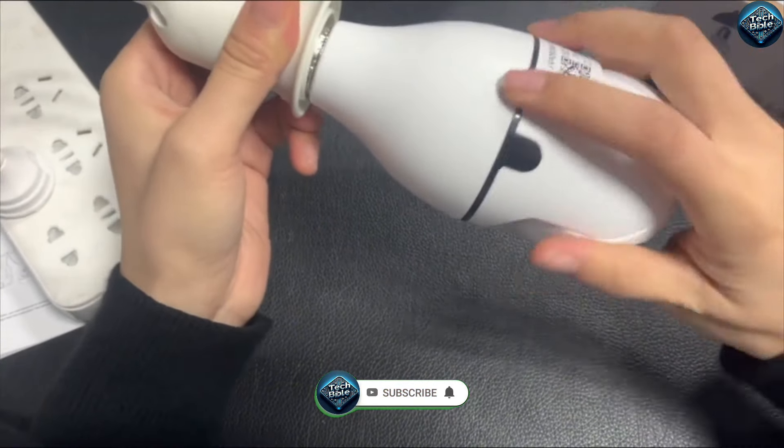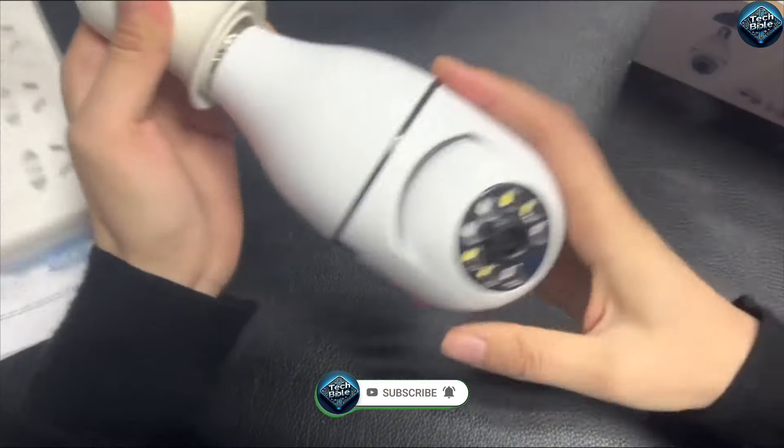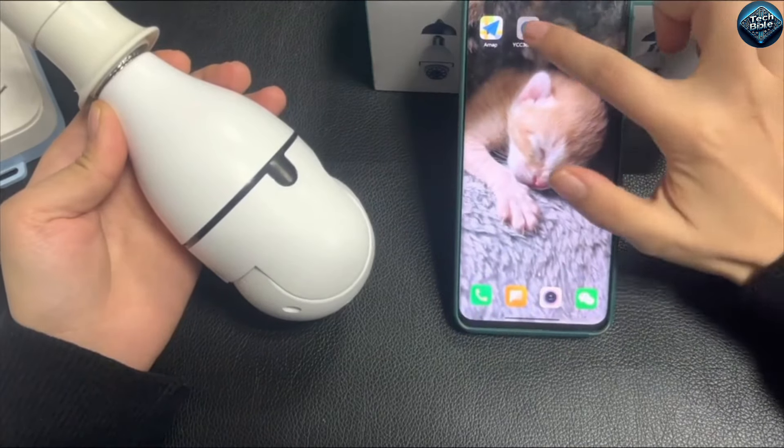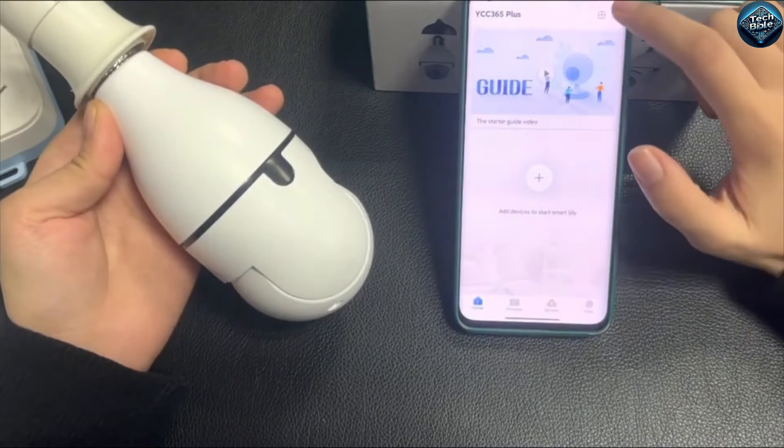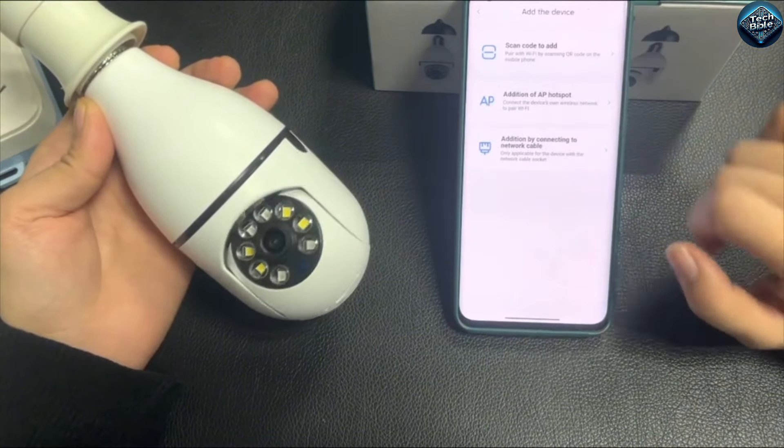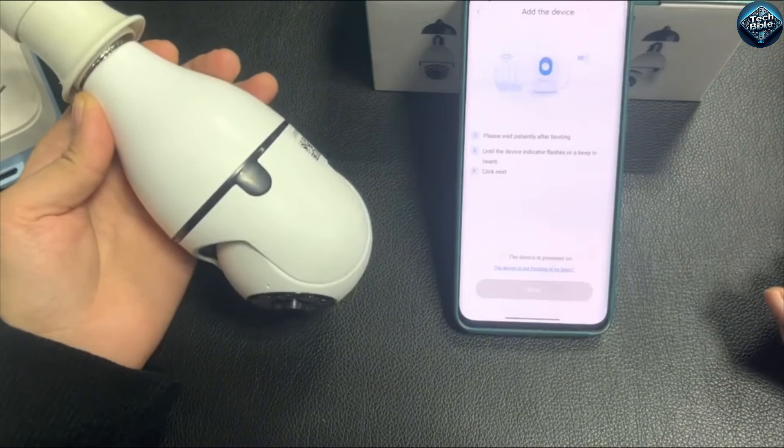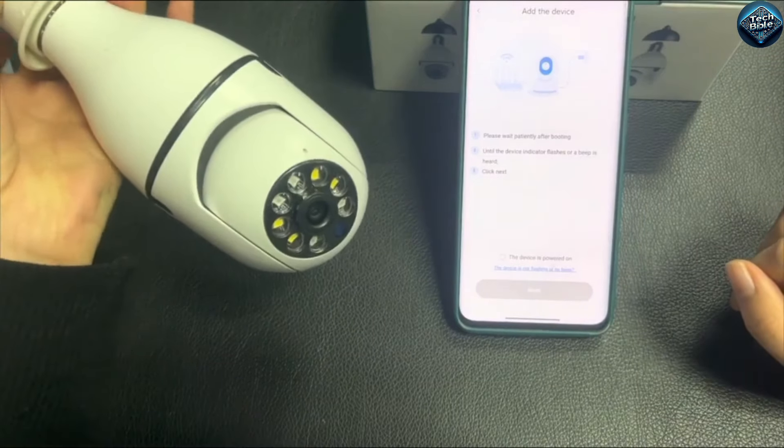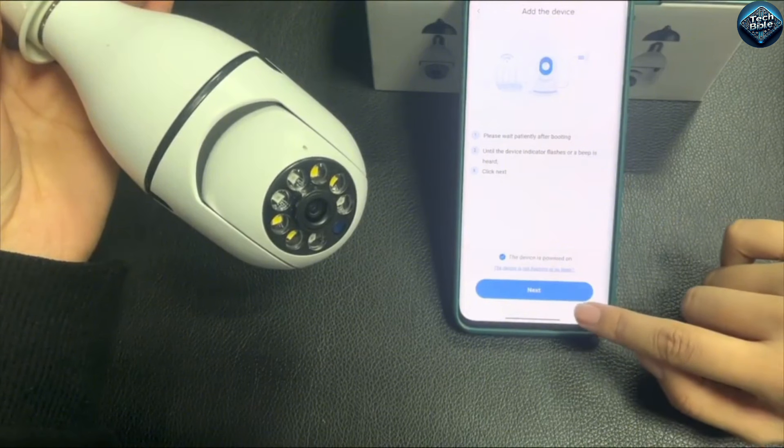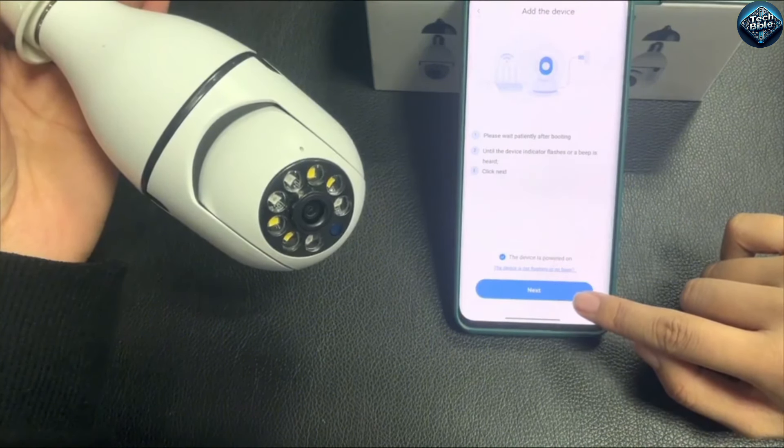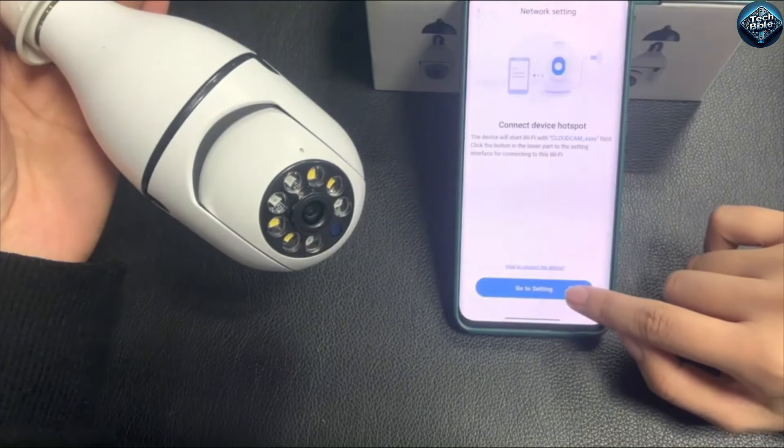It captures and transmits video footage through Wi-Fi, often without the knowledge of those being recorded, raising significant ethical and legal issues. The lack of clear regulations around its use has led to its prohibition in areas where privacy protection is a priority. As technology evolves, it's essential to stay informed about the legal implications of using such devices to ensure that personal privacy is respected and upheld.